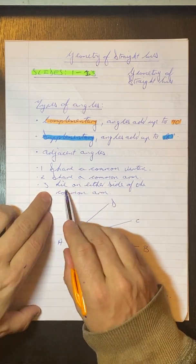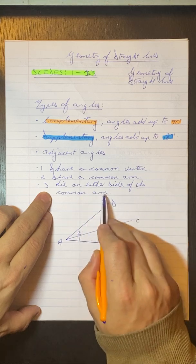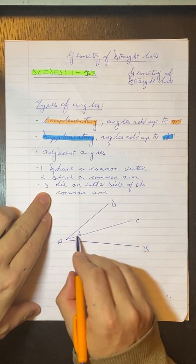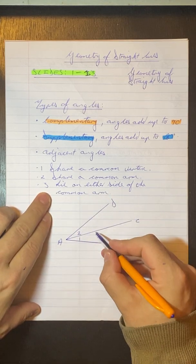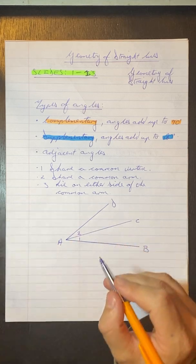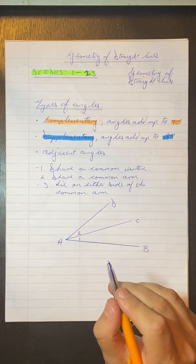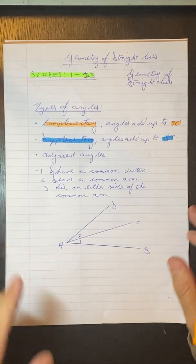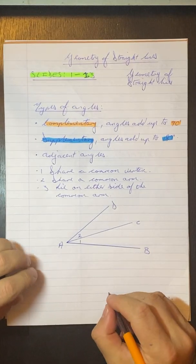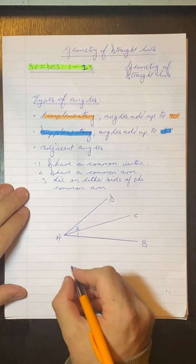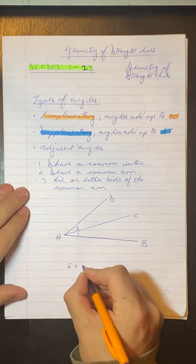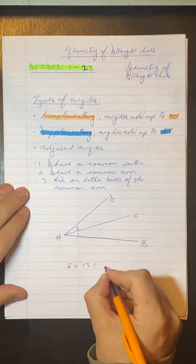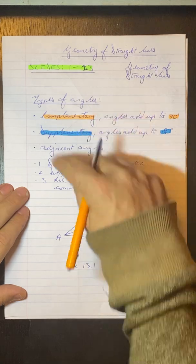Then their third property, they lie on either side of this common arm. And you can see here's their common arm, and they lie on that side and that side. So on either side of the common arm. Now, what I would like you guys to do from that, and just remember that this is all revision, I would like you guys to do exercise 13.1 for this section here.